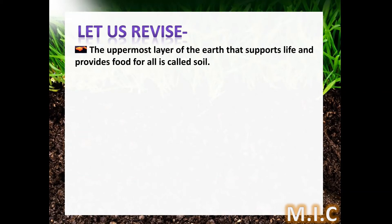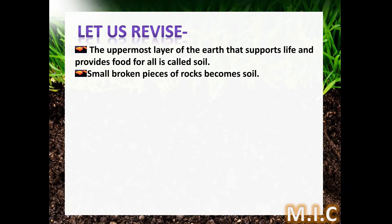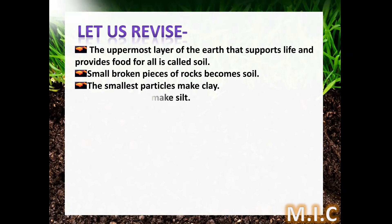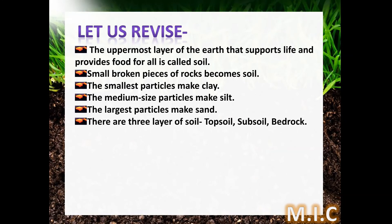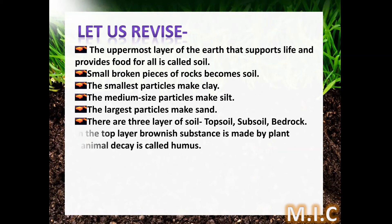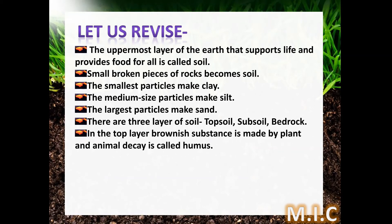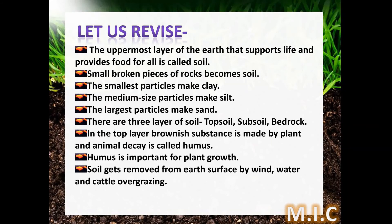Let us revise: the uppermost layer of earth that supports life and provides food for all is called soil. Small broken pieces of rocks become soil. The smallest particles make clay, the medium sized particles make silt, the largest particles make sand. There are three layers of soil: topsoil, subsoil, and bedrock. In the top layer, the brownish substance made by plant and animal decay is called humus. Humus is important for plant growth.